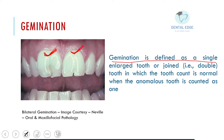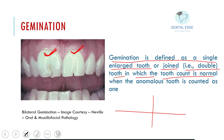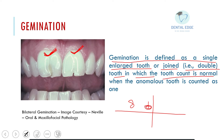Germination is defined as a single enlarged tooth or joined double tooth in which the tooth count is normal. For example, if there are eight tooth germs in one quadrant and one of them attempts to divide, we will see two teeth joined to each other, but if this is counted as one, the total number remains unchanged. I am emphasizing this because we will compare it with fusion, which will be covered in the next lecture.